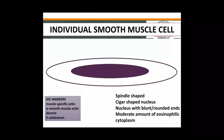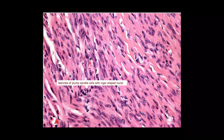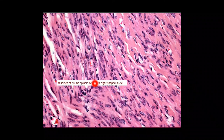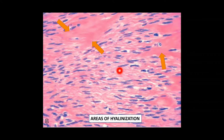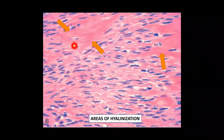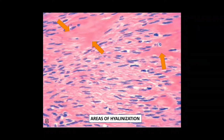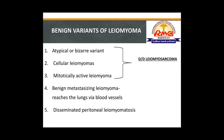Further microscopic images of leiomyoma show benign smooth muscle cells with blunt-ended cigar-shaped nuclei in bundles. A common secondary change seen is hyalinization — pinkish hyalinized areas within the tumor. Other secondary changes include mucoid change and cystic change, all of which can be seen in leiomyoma.